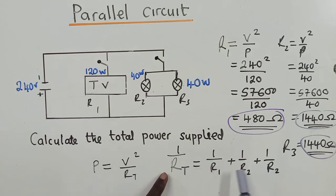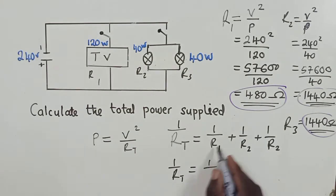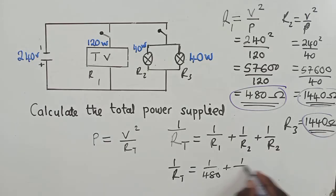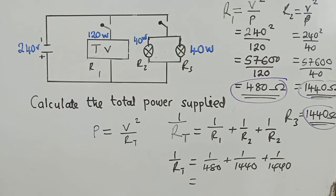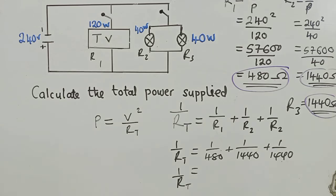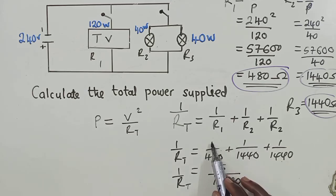The inverse of R_total equals 1/R1 plus 1/R2 plus 1/R3, which is 1/480 plus 1/1440 plus 1/1440. When we solve, 1/R_total equals 5 over 1,440. The common denominator gives us 3 for the first term and 1 each for the others, so they add to 5.